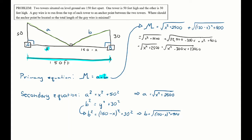Now I take the derivative to find the critical numbers, since that's where a max or min occurs. Using the chain rule, where the outer function is the square root, the derivative is 1 over (2 times the square root) evaluated at the inner function, times the derivative of the inner function. So m′ = x / √(x² + 2500) + (2x − 300) / (2√(x² − 300x + 23400)).